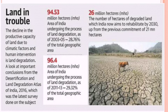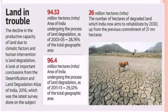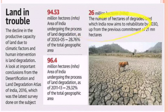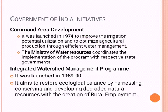94.53 million hectares of Indian land is under degradation — about 28% of India's land, as recorded in 2003–05. This increased to 29% in 2011–13. India has committed to rehabilitating 26 million hectares by 2030 through the Bonn Challenge, accepted at COP14. The government is committed to stopping degradation and ensuring desertification does not continue under this commitment.